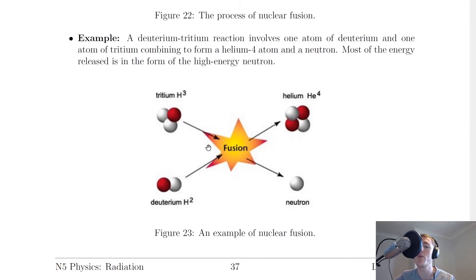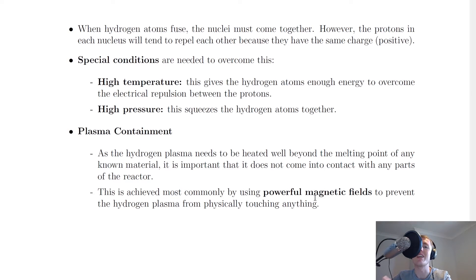We're now going to look at why nuclear fusion is difficult to do. When hydrogen atoms fuse, the nuclei must come together, however the protons in each nucleus will tend to repel each other because they have the same charge—they're both positively charged. Remember, like charges repel, and we therefore need special conditions to overcome this.